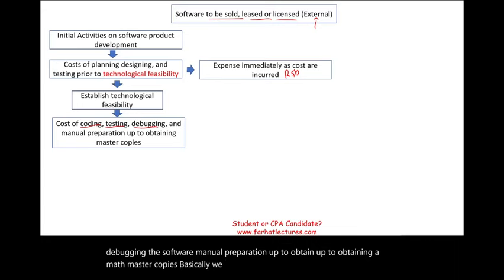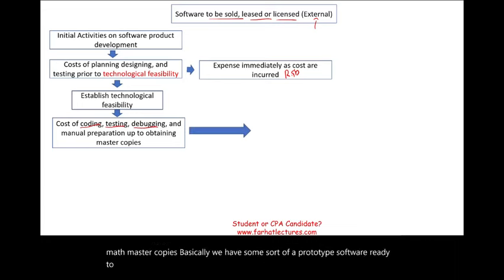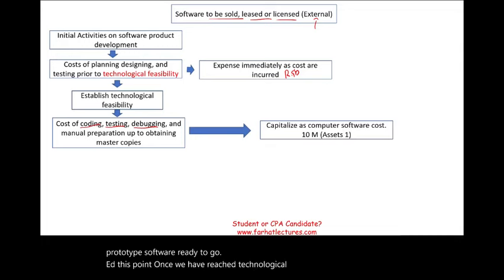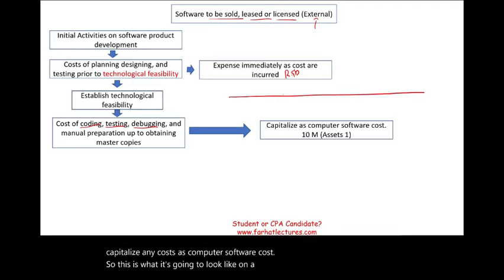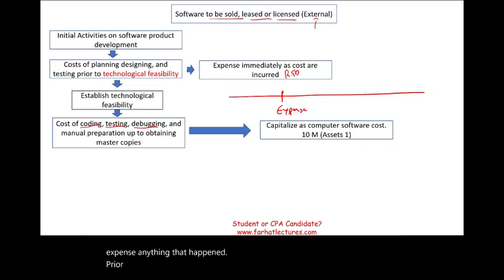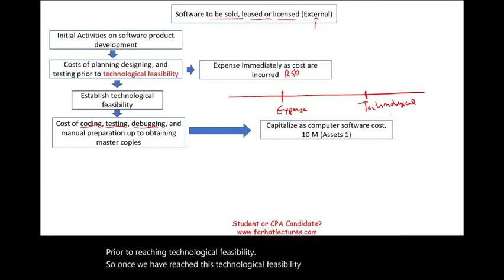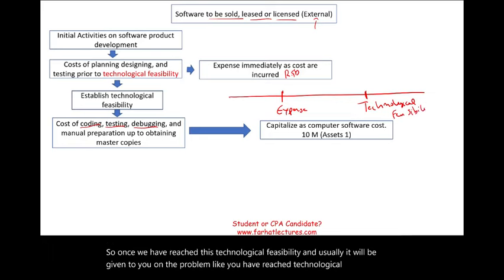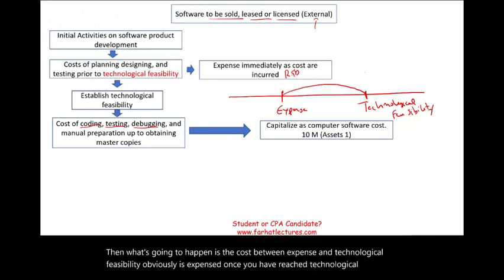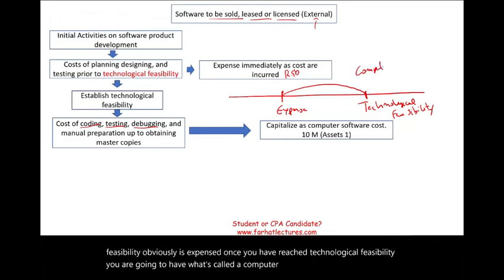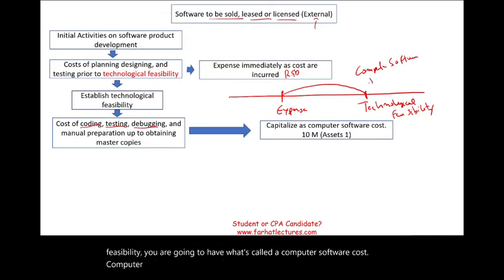Basically, we have some sort of a prototype software ready to go. At this point, once we have reached technological feasibility, we are going to capitalize any cost as computer software cost. On a timeline, we're going to expense anything that happened prior to reaching technological feasibility. Once we have reached technological feasibility — and usually it will be given to you in the problem — then costs between the start and technological feasibility are expensed. After that point, you will have what's called computer software cost, some sort of an intangible.